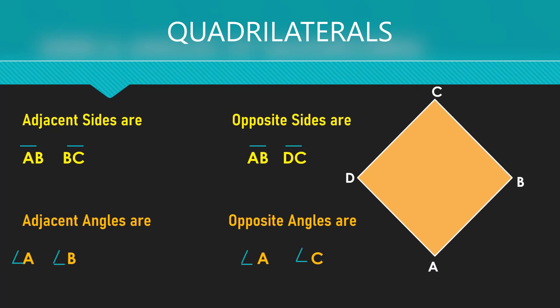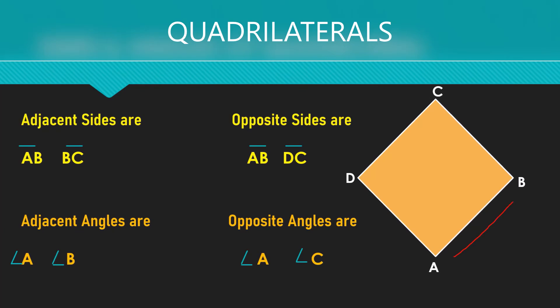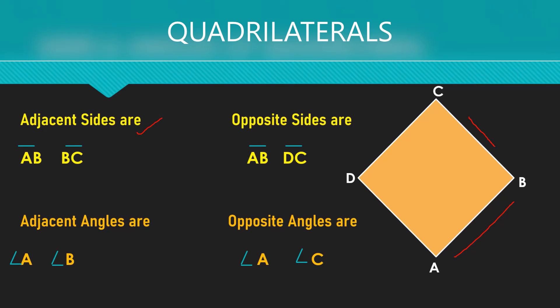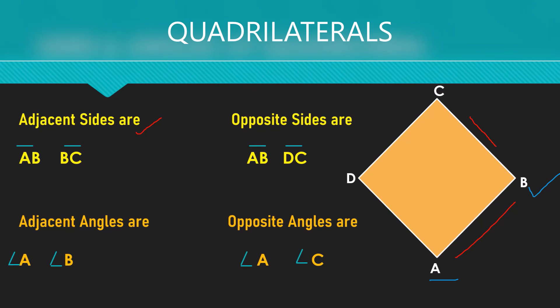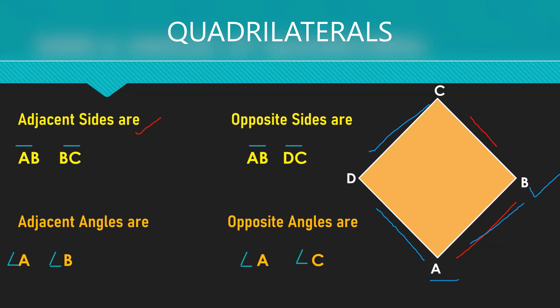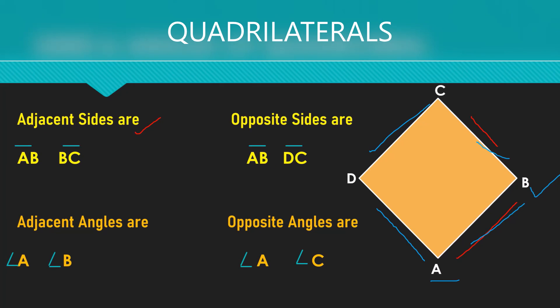Now, sides and angles of a quadrilateral in detail. Adjacent sides means the sides which are nearby or side by side, like AB and BC are side by side, so these are called adjacent sides. Adjacent angles are angle A and angle B. Opposite sides are AB and DC, and AD and BC. Opposite angles are angle A and angle C, and angle B and angle D.